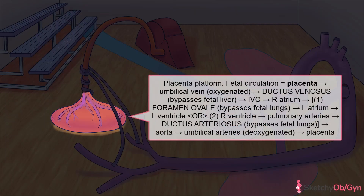The first reason fetal physiology is different from maternal physiology is the placenta, represented by this placenta platform. Among its many jobs, the placenta acts as the fetal lungs, performing gas exchange while her actual lungs fully develop.